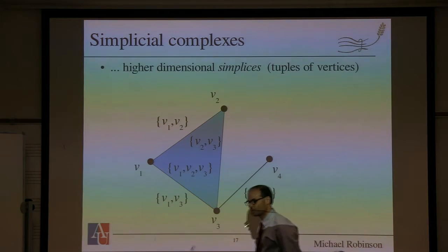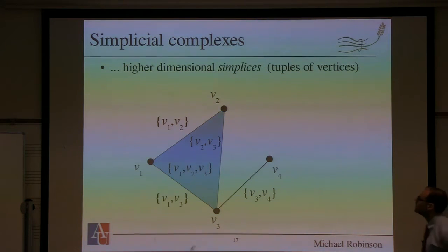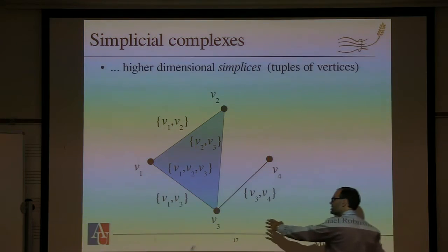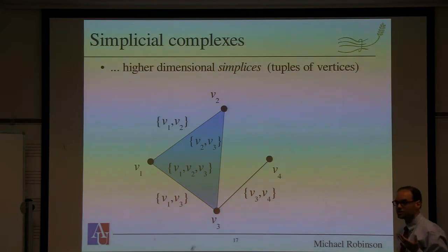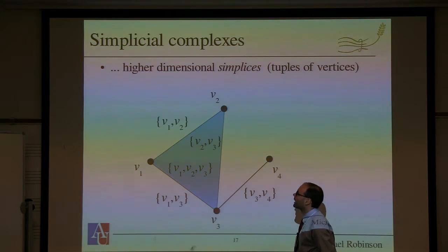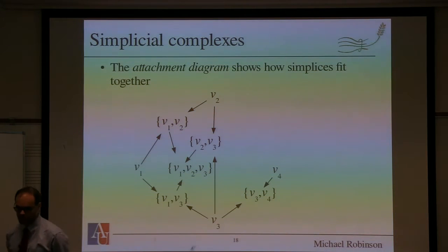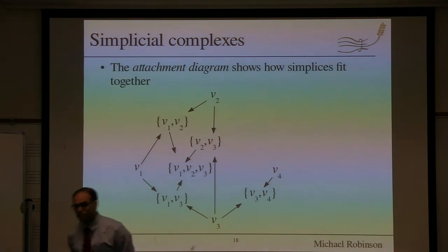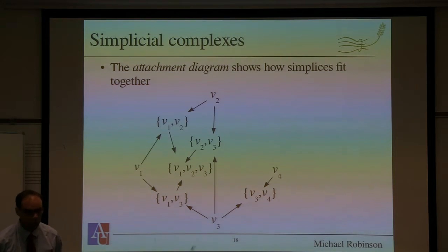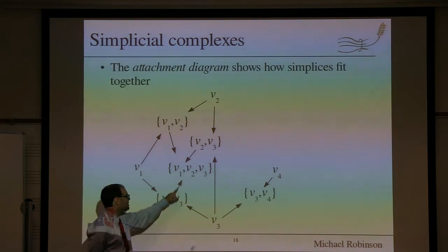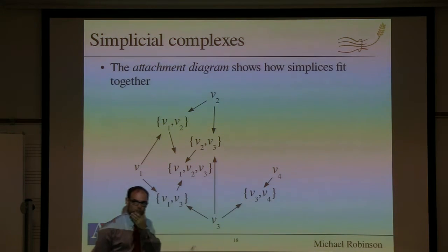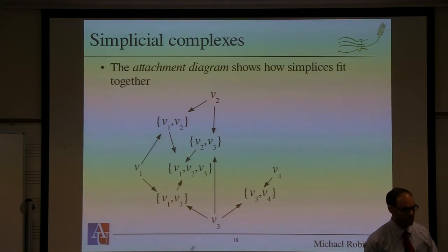Let's talk about sheaves on a simplicial complex — that's probably the best place to start. I've got my simplicial complex with vertices, edges, and faces. Vertices are subsets of edges; edges are subsets of faces; because these are sets, I can draw arrows representing subset relations. This arrow is the function that maps v1 to v1 and v3 to v3. This construction can be done whenever you have an abstract simplicial complex or even a hypergraph — it gives you an attachment diagram showing how the various simplices fit together.